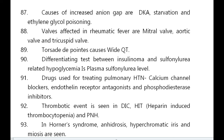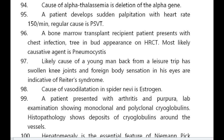Thrombotic events are seen in DIC, HIT, and PNH. HIT is heparin-induced thrombocytopenia. In Horner syndrome, anhidrosis, hyperchromic iris, and miosis are seen. Cause of alpha thalassemia is deletion of the alpha gene.